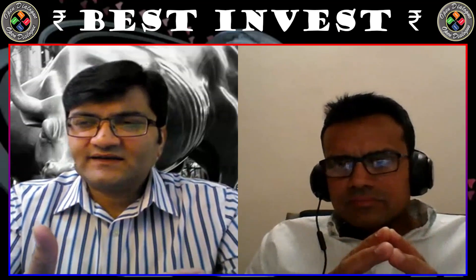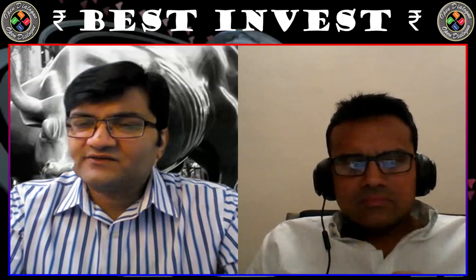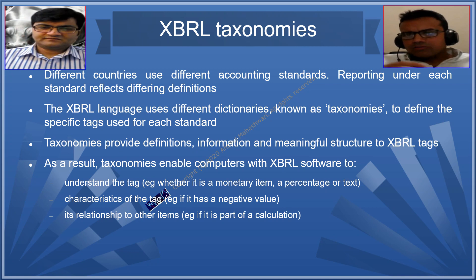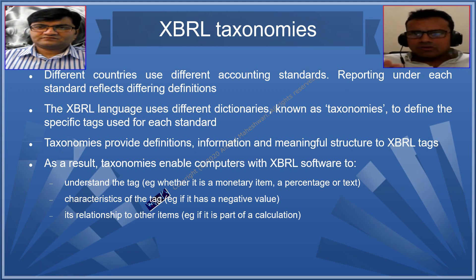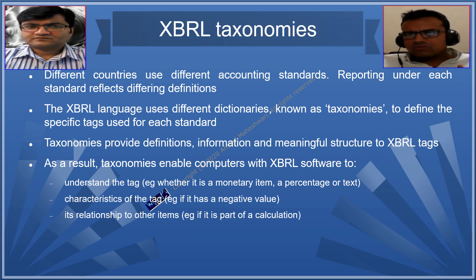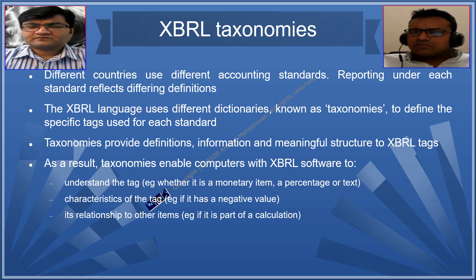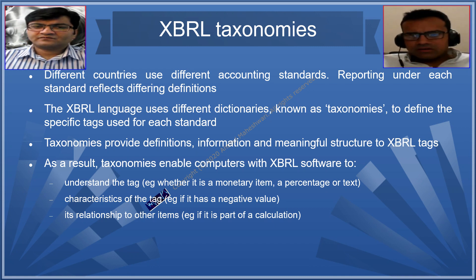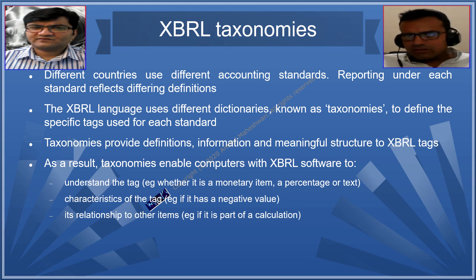What are the taxonomies of XBRL and how does it work? Taxonomy is basically a dictionary — like you need a dictionary to write sentences in English. Similarly, for this business reporting language you need a predefined taxonomy, a set of tags and definitions associated with those tags. Different countries have different accounting standards, so each country will have its own taxonomy based on their accounting standard. Taxonomies provide definitions, information, and meaningful structure to the XBRL tags.